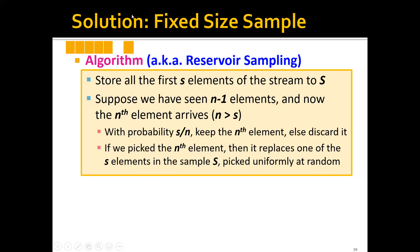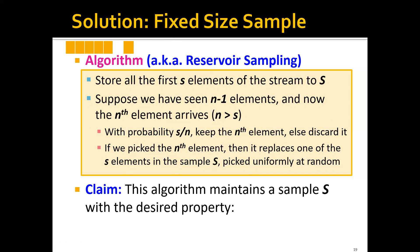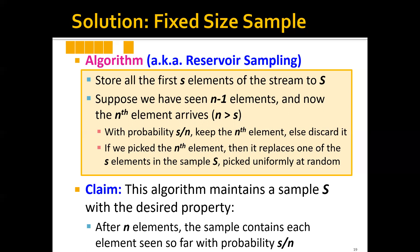More concretely, let's say we have already seen five elements and a new element arrives. If we decide to keep this new element, we randomly select one of the old elements and discard it, because we only have space for five elements. The claim is that this algorithm maintains a sample S with the desired probability — that is, after n elements, the sample contains each element seen so far with probability S over n.